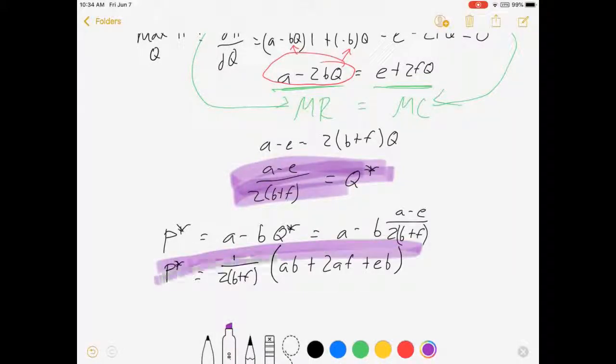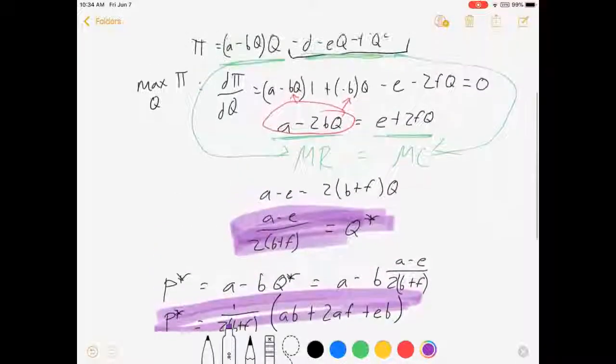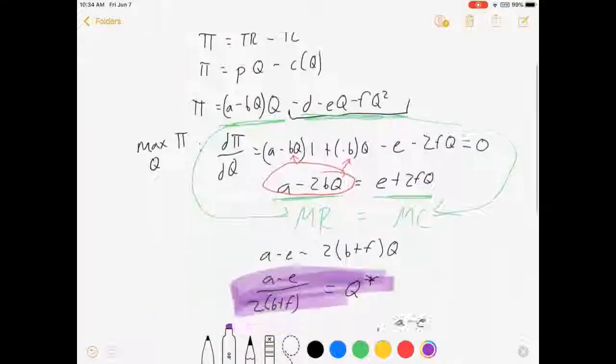So we'll highlight that because that's important too. Alrighty. We solved for Q and P. That's the hardest part. We've shown what the monopoly wants to do.